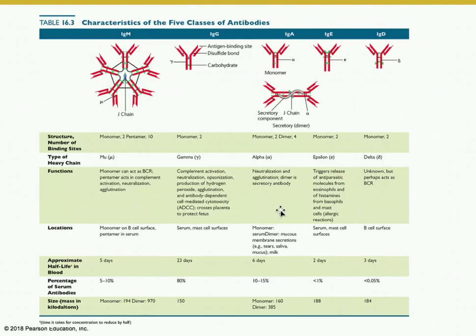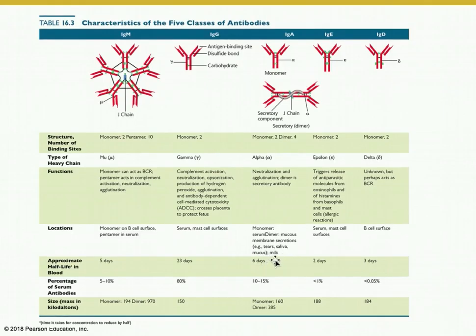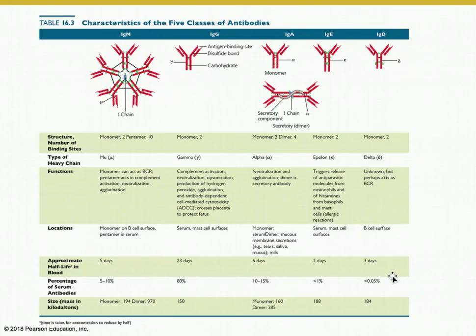IgA is secreted in the intestinal lumen and is also involved in secretions such as tears, saliva, and mother's milk — it has a shorter half-life. IgE is involved in allergies, found on mast cells involved in allergic reactions. Lastly, IgD is a very minor component of the antibody population.